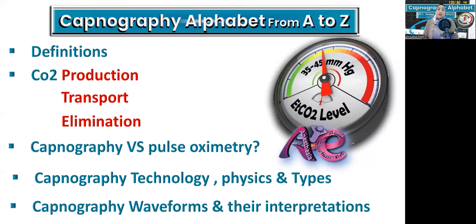We will talk about definitions, CO2 production, elimination, and transport. We will discuss capnography versus pulse oximetry — which is better to use during patient monitoring and anesthesia monitoring. Is it better to use capnography alone, pulse oximetry alone, or are both mandatory? We will also talk about capnography technology, physics, and types.